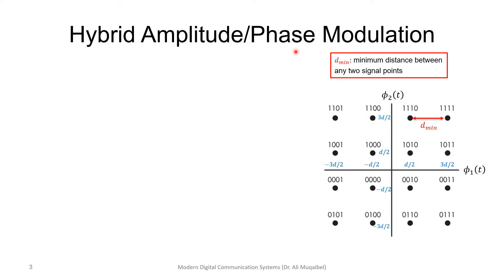QAM is Hybrid Amplitude Phase Modulation. Remember that in M-ary PSK, the envelope of the signal is assumed to be constant. All signal points lie on a circle with fixed radius. This is not the case here. Points don't have a fixed envelope and they don't lie on a circle.